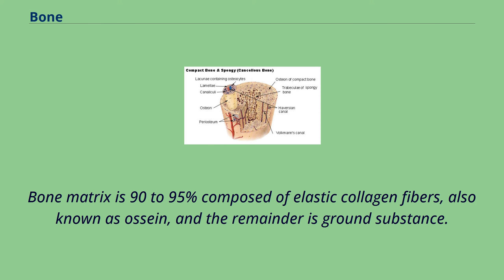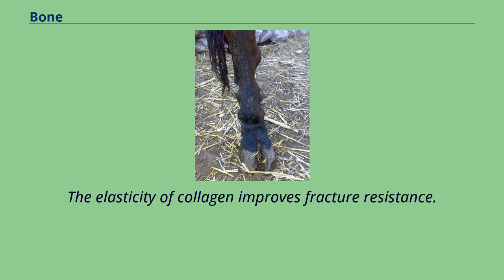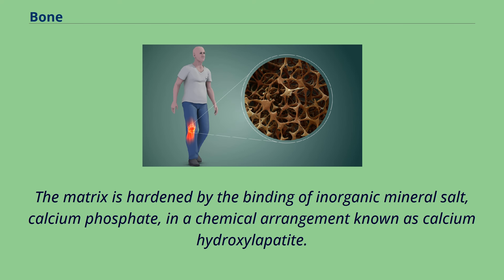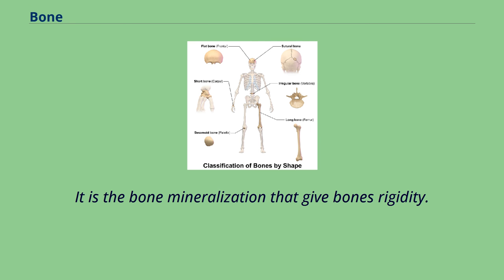Bone matrix is 90–95% composed of elastic collagen fibers, also known as ossein, and the remainder is ground substance. The elasticity of collagen improves fracture resistance. The matrix is hardened by the binding of inorganic mineral salt, calcium phosphate, in a chemical arrangement known as calcium hydroxylapatite. It is bone mineralization that gives bones rigidity.